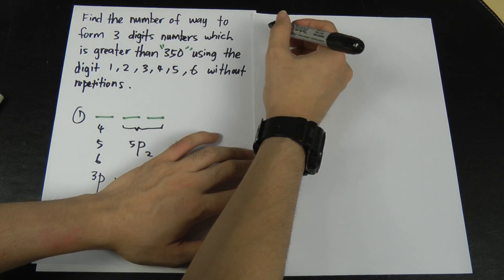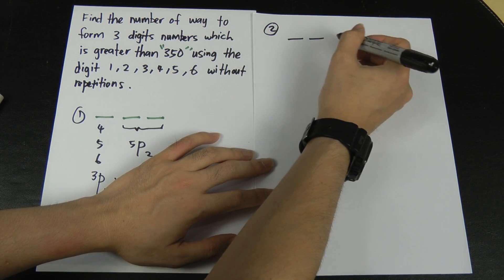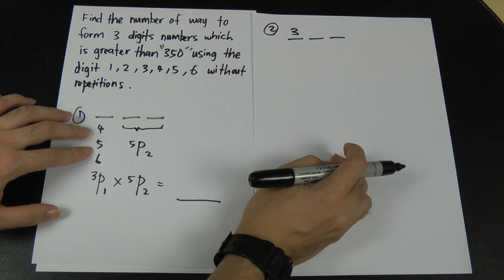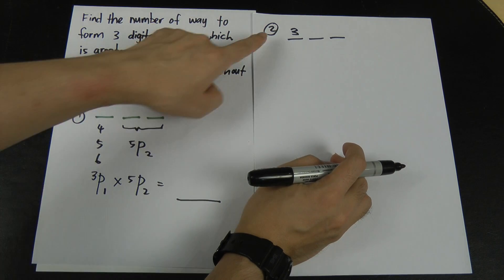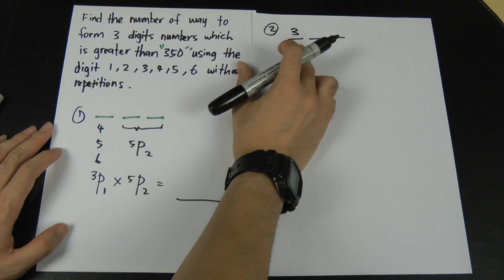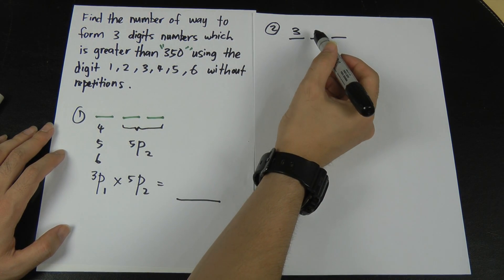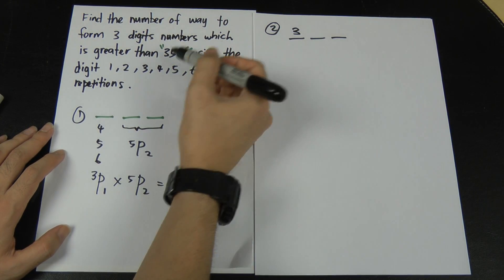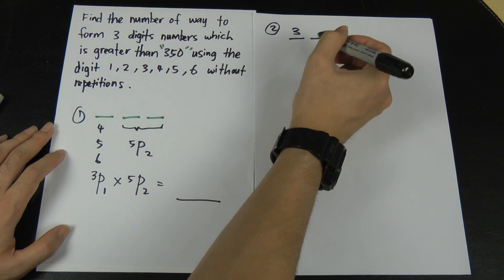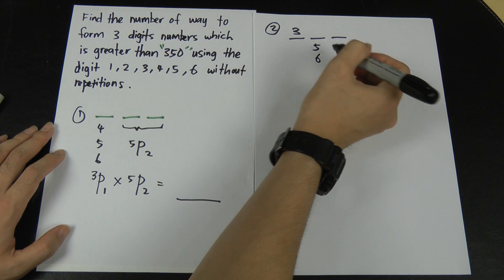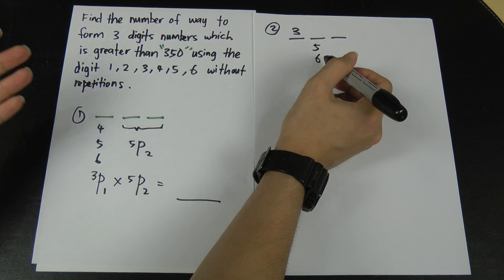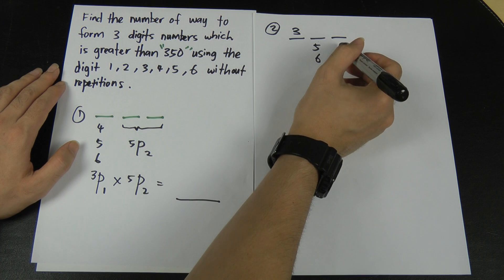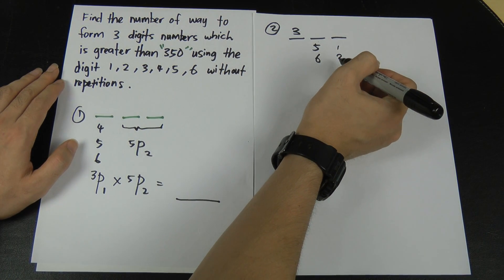Case 2 is a bit special. If the first digit is 3, I need to make sure the number is still greater than 350 without repetition. So for Case 2, I use only 3 for the first place. If I use 3 in the first place, I cannot use 1, 2, 3, or 4 in the second place — those would make the number less than 350. So the second place can only be 5 or 6.